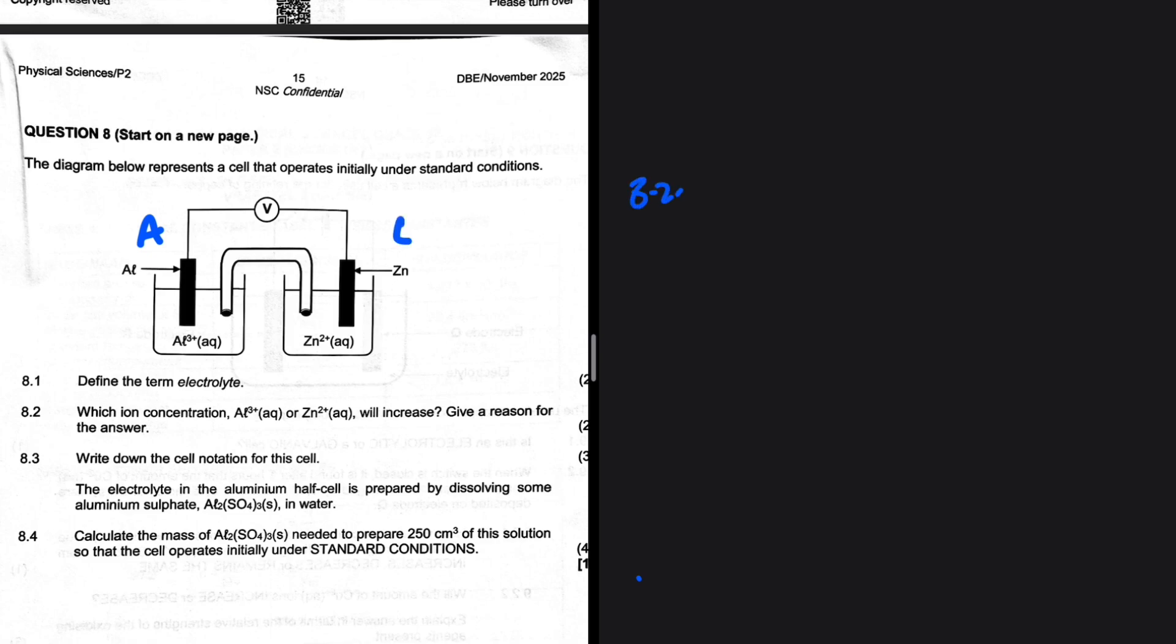So at the anode, this is what is happening. We have aluminum becoming Al³⁺ plus 3 electrons. So the concentration that increases is therefore that of aluminum 3 plus.